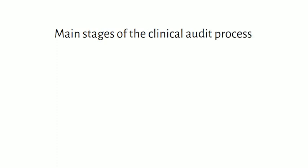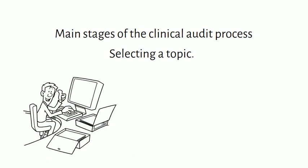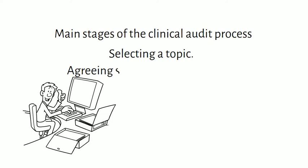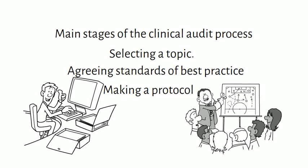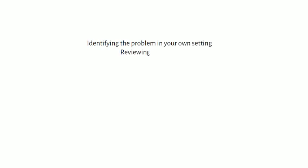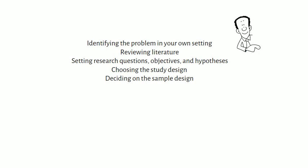The main stages of the clinical audit process are: first, selecting a topic. Once you have selected a topic and agreed on the standard of best practice to audit against, you then start developing a protocol. The protocol will include identification of the problem in your own setting, reviewing the literature to see the comparison, and setting the research question, specific objectives, and hypothesis.